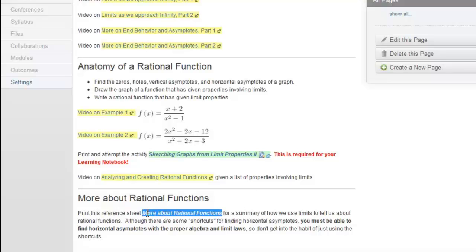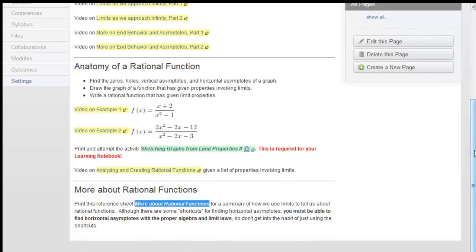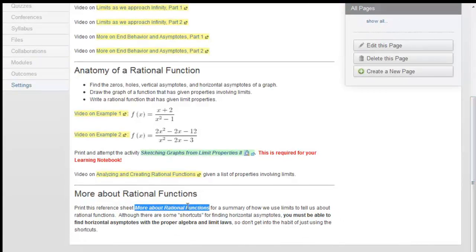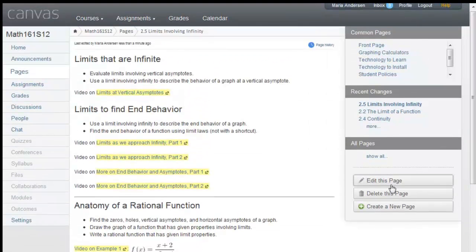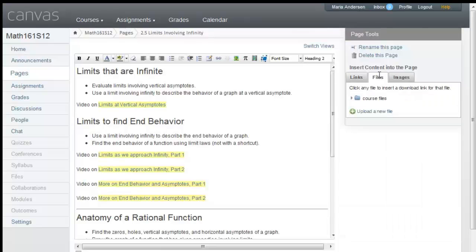I know that the file is called something like More About Rational Functions. If you're lucky, you've named the file something close to what you wrote in your text. That would be good practice in the first place. Let's edit the page and go to Files, Course Files.